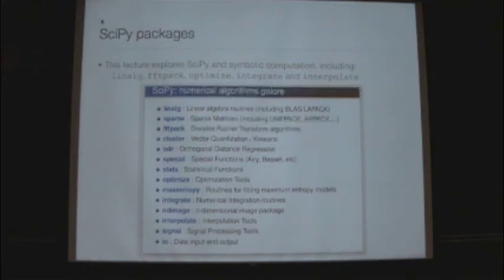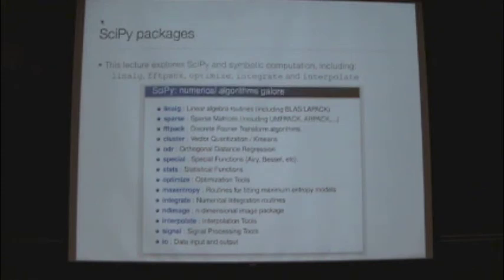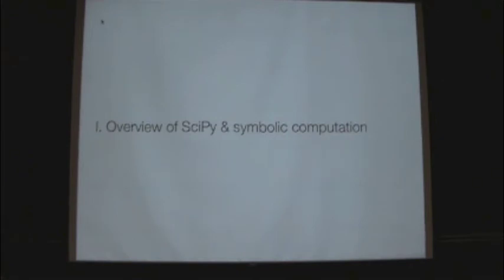SciPy is structured as a large package with many sub-modules. Each sub-module contains many functions and routines that provide particular scientific functionality. In this lecture, I'm going to talk about SciPy generally and symbolic computation, and then about specific packages: linear algebra, Fourier transforms, optimization, integration, and interpolation — which in my view are all fundamental scientific tasks we would want to accomplish with Python. That's the structure of what I'll be talking about for the next hour. Are there any questions before I move on?